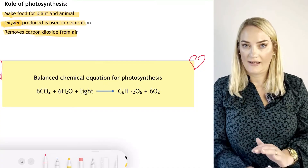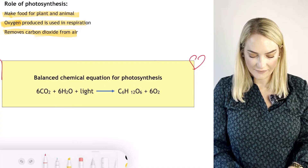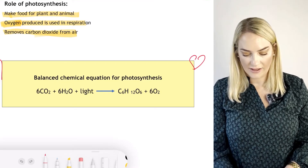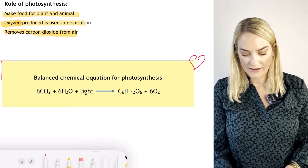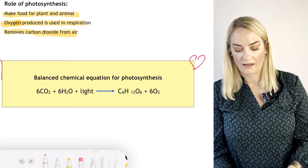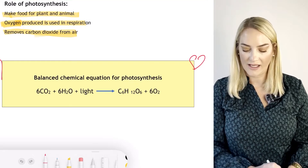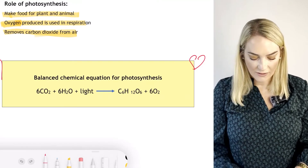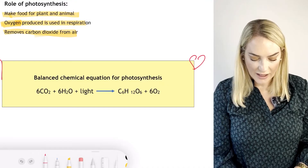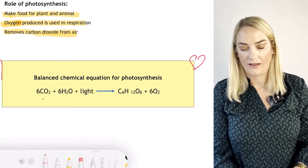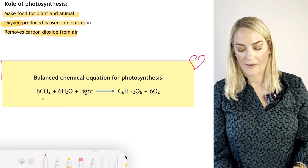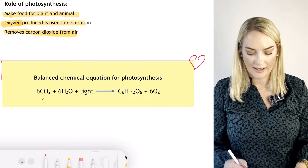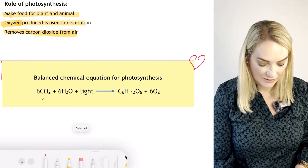The chemical equation: 6CO₂ (six carbon dioxide) plus 6H₂O (six water) with sunlight gives us glucose C₆H₁₂O₆ and oxygen 6O₂. So carbon dioxide plus water with light makes glucose and oxygen. You need to know both the word and chemical equations.